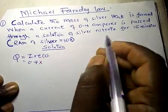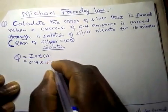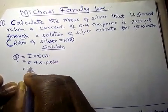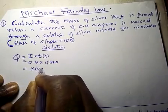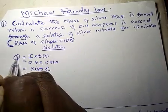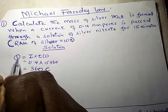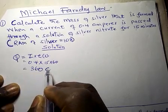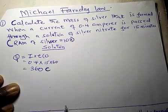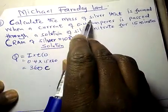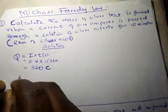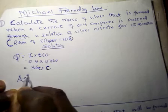Time is 15 minutes, so we multiply 15 times 60 to convert to seconds. This gives us 360 coulombs. Remember, quantity of electricity passed through during electrolysis is measured in coulombs — the SI unit is coulombs. Silver was formed.